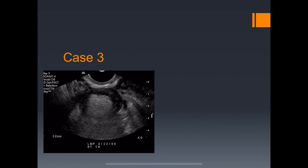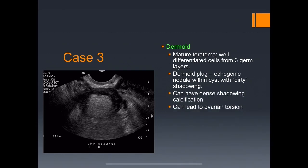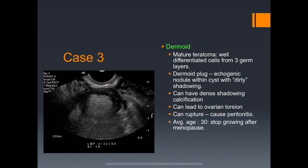Case three: this lesion is typical of a dermoid — a mature teratoma with well-differentiated cells from three germ layers. This is typical of the dermoid plug: an echogenic nodule with dirty shadowing. They can have calcification, can lead to ovarian torsion if large enough, and if they rupture can cause chemical peritonitis. Average age is 30 but they stop growing after menopause; malignant transformation can occur in older patients.